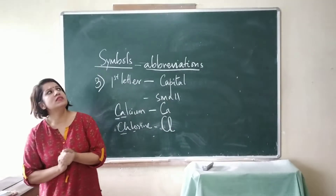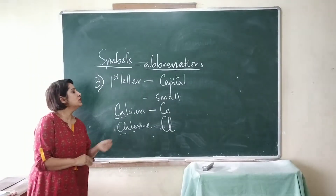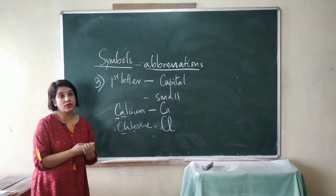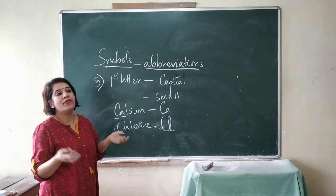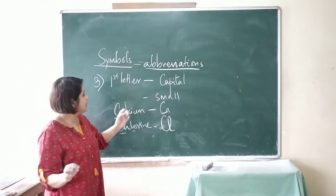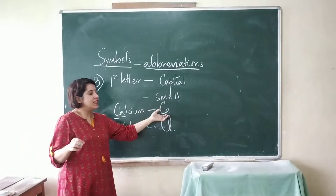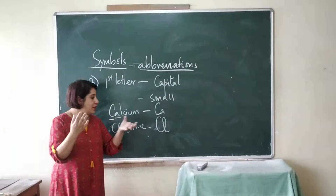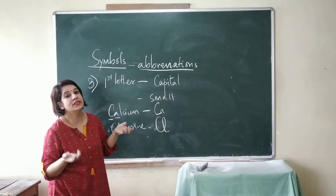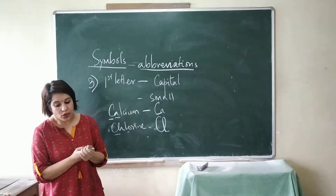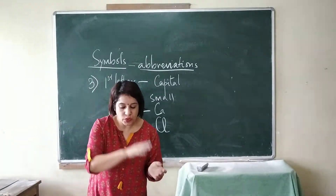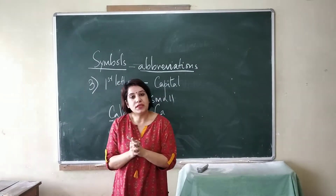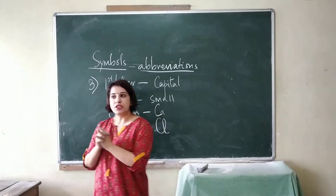Why do we use symbols? Symbols are used to make it very convenient. So wherever you go, if Ca is written, that means it is calcium. This is how elements are denoted using their symbols.